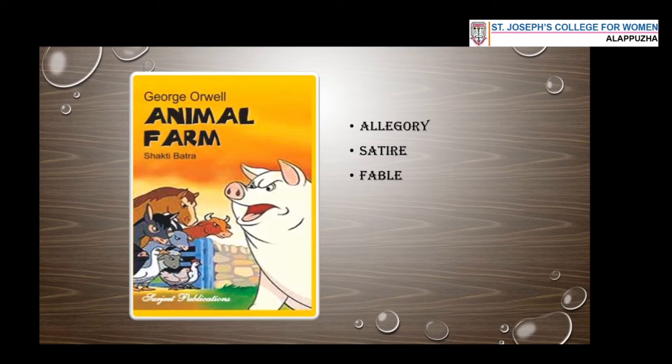Animal Farm is a political allegory because the characters and actions represent or allegorize historical personages and events. The characters and events represent historical personages of the Russian Revolution. I hope you remember the discussion we had on the Russian Revolution in the last class. So Animal Farm is an allegory novel and it is a political allegory.